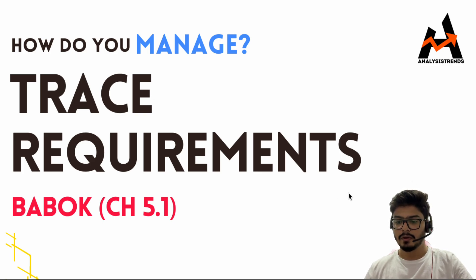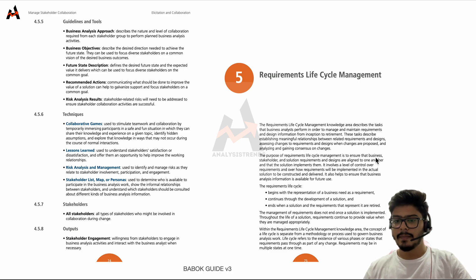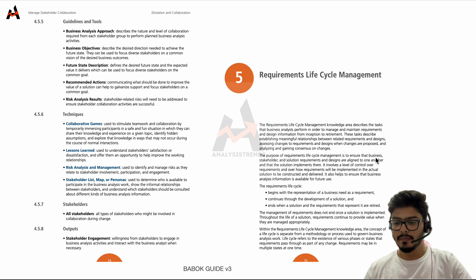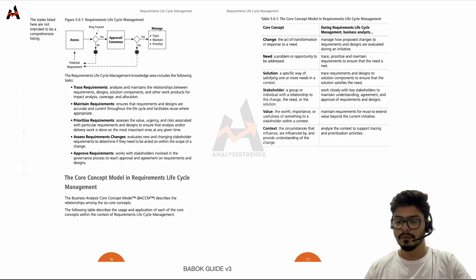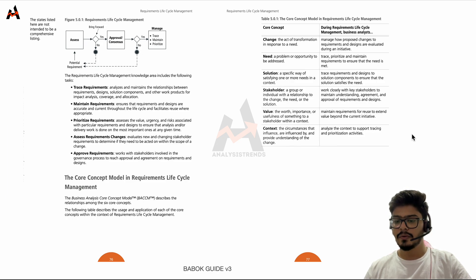As per this topic, Requirement Lifecycle Management is the fifth chapter in BABOK, which describes how requirements flow and what the lifecycle looks like. There are five subtopics: trace, maintain, prioritize, assess, and approve requirements. In this video we are going to focus only on trace requirements.